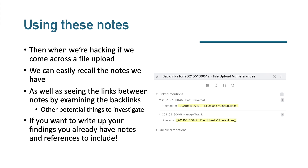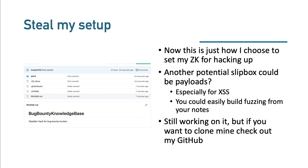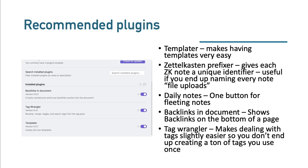If you want to steal my setup, you absolutely can — I've put it on GitHub, linked in the video description, called 'bug bounty knowledge base.' It's not perfect but if you want what's in this video, clone it and open it in Obsidian. You'll need some plugins: Templater for templates, Zettelkasten Prefixer to give each note a unique identifier, Daily Notes for fleeting notes, Backlinks in Document to show backlinks at the bottom of the page, and Tag Wrangler to manage tags so you don't end up with tags you only use once.